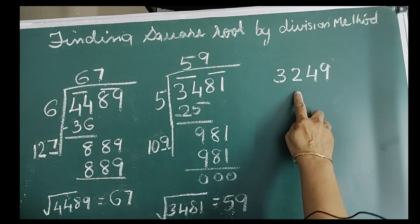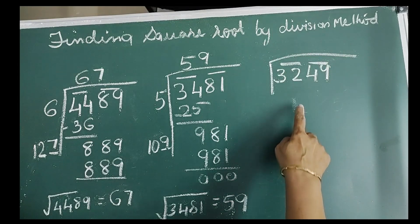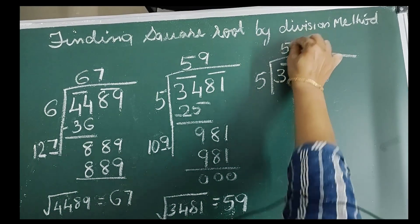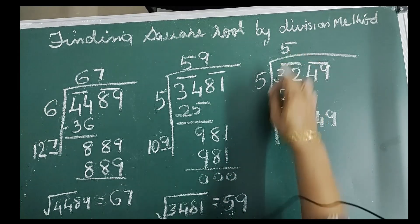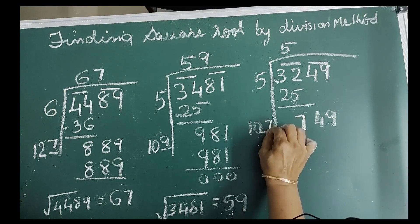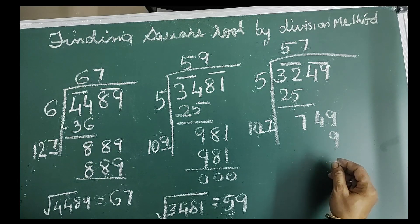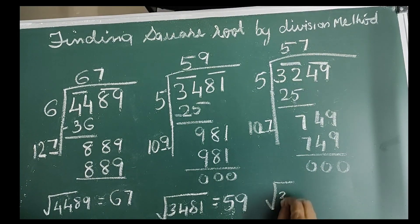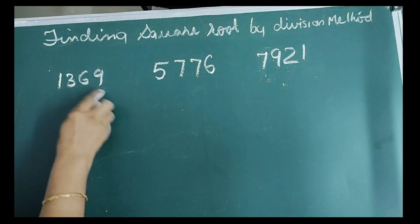Next number is 3,249. Place bars, then under the leftmost bar is 32. Take divisor and quotient as 5. 5 times 5 is 25, remainder is 7. Bring down the next bar 49, new dividend is 749. Double the quotient to get 10 with a blank. Guess digit 7, quotient also 7. 7 times 107 gives 749, remainder is 0. Therefore, square root of 3,249 is equal to 57.